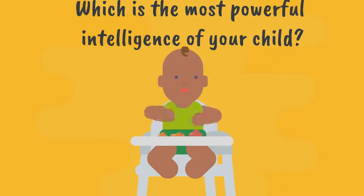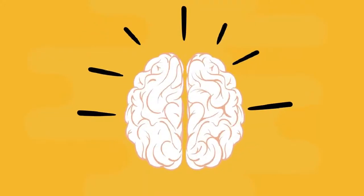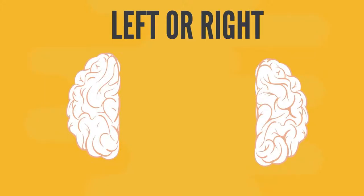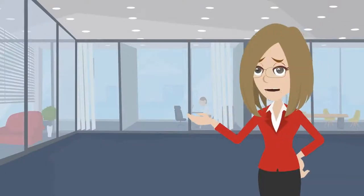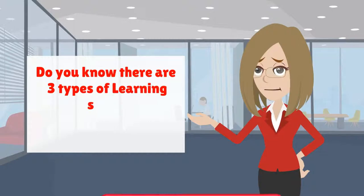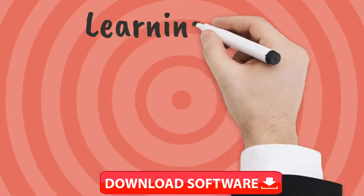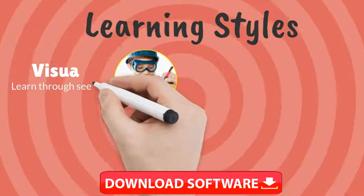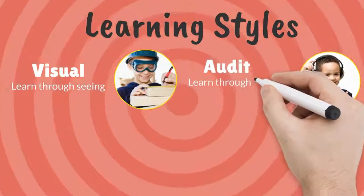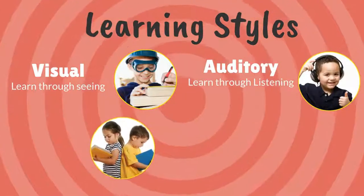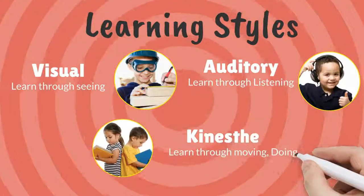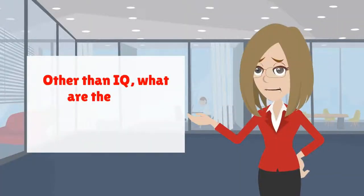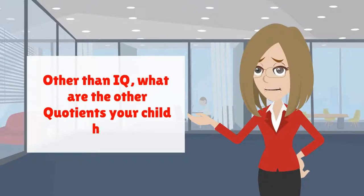Do you know which is the most powerful intelligence of your child, and which brain hemisphere is stronger — left or right? There are three types of learning styles: visual (learn through seeing), auditory (learn through listening), and kinesthetic (learn through moving, doing, and touching).